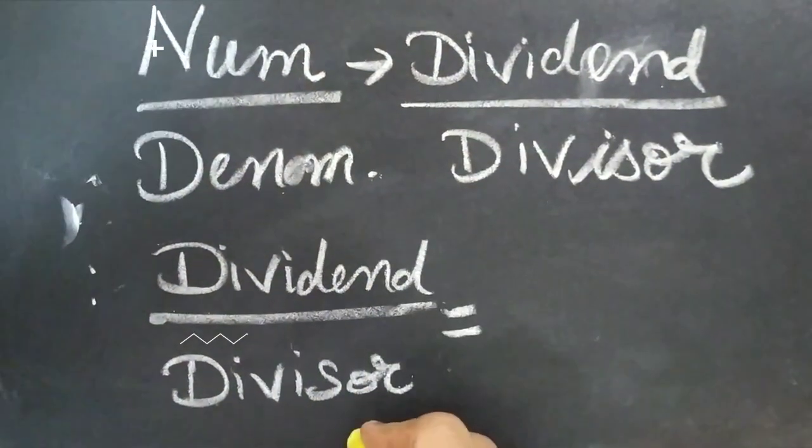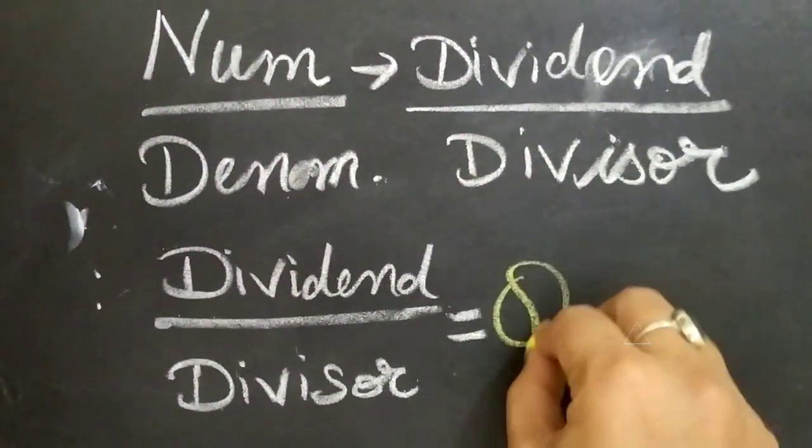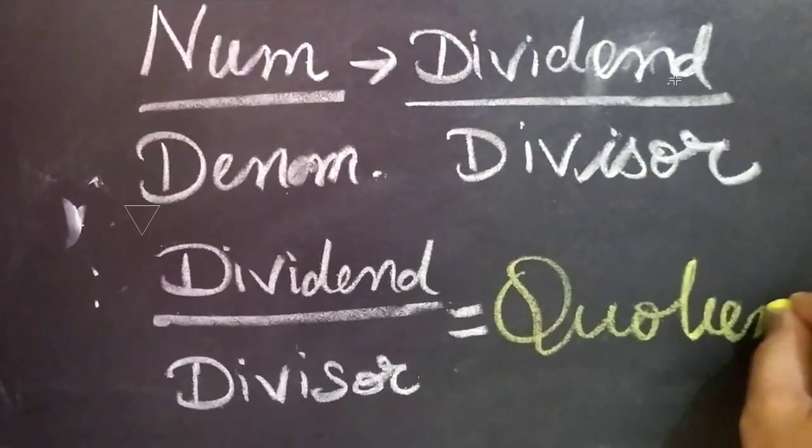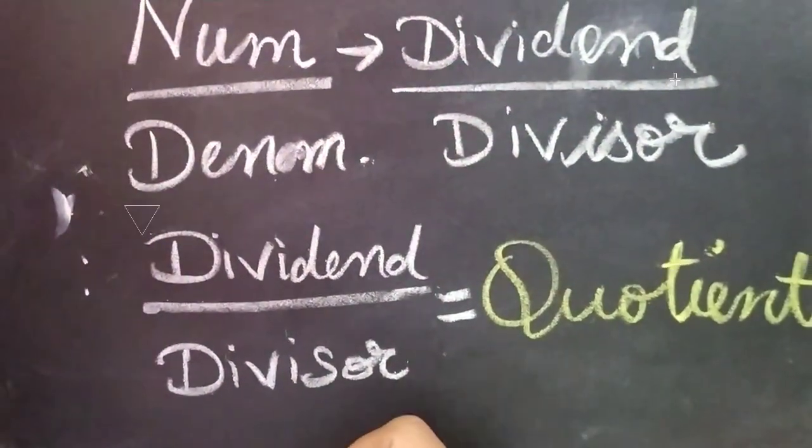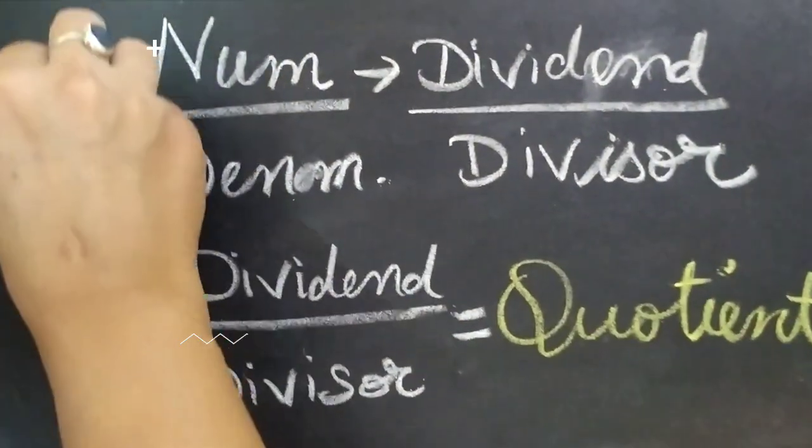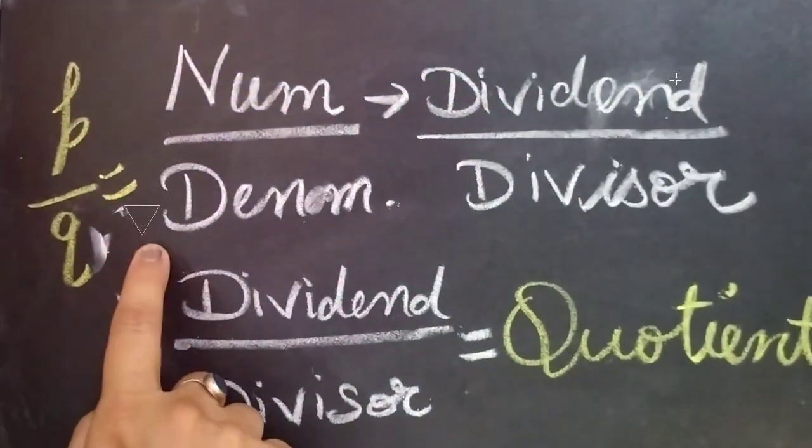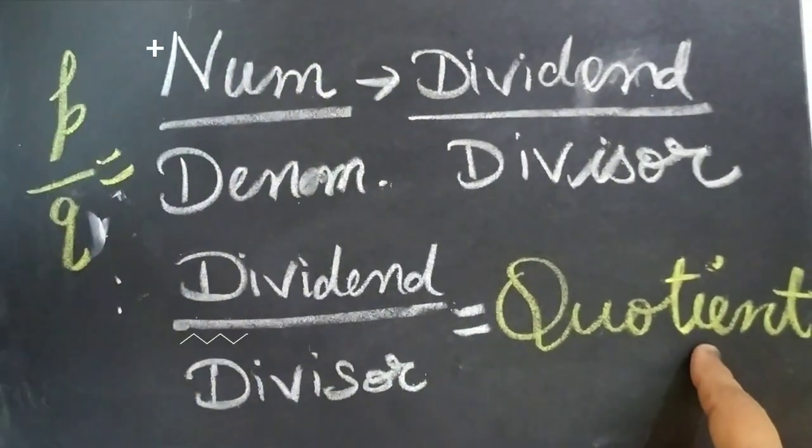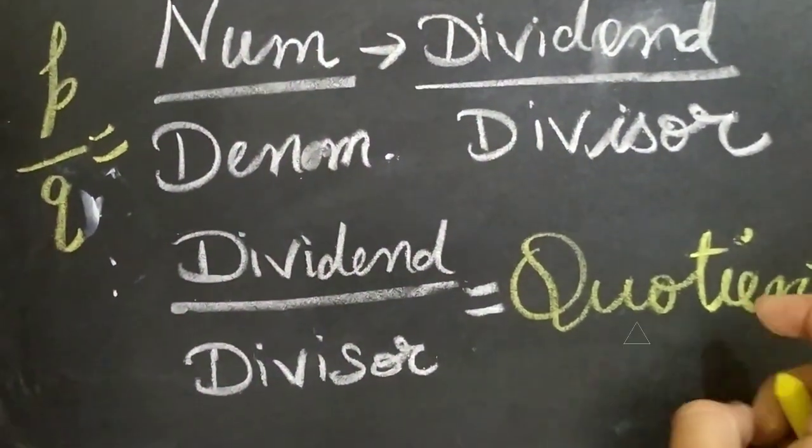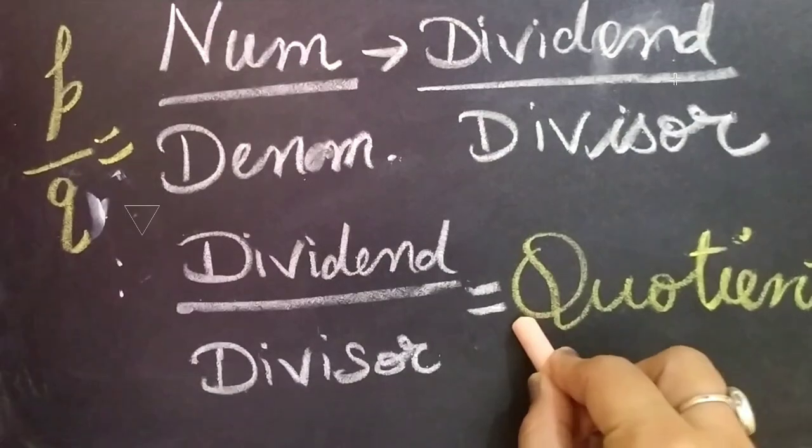What do we get? Quotient, right! So we have started with p by q, so that means p by q and the answer is going to be quotient. And what is the first alphabet in quotient? It is Q.